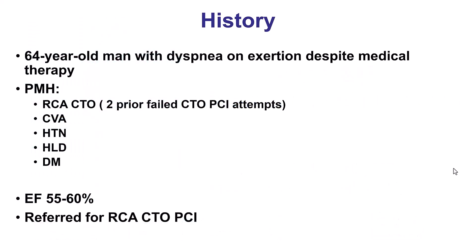The patient presented with dyspnea on exertion that was considered to be an anginal equivalent, because she had normal ejection fraction and single-vessel coronary disease with an occlusion of the right coronary artery. Two attempts for opening the RCA CTO at a different institution were not successful.